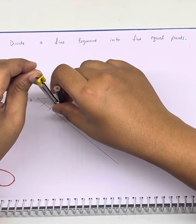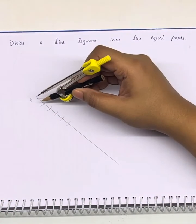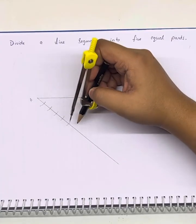Fourth, fifth cut. We have one, two, three, four, five parts.